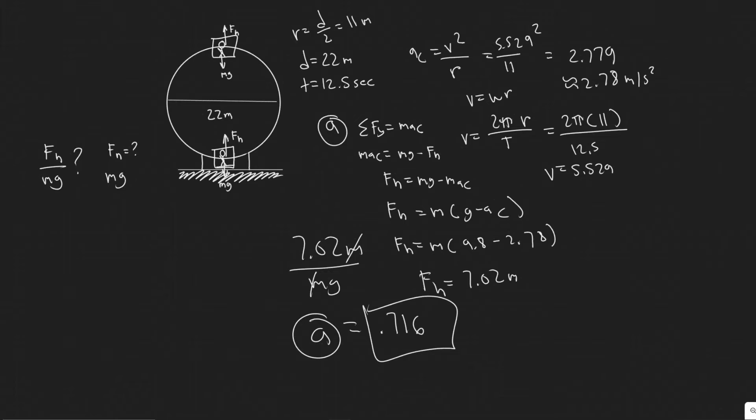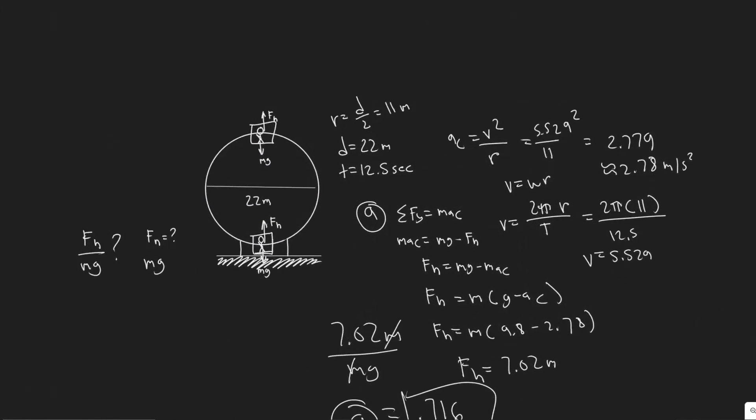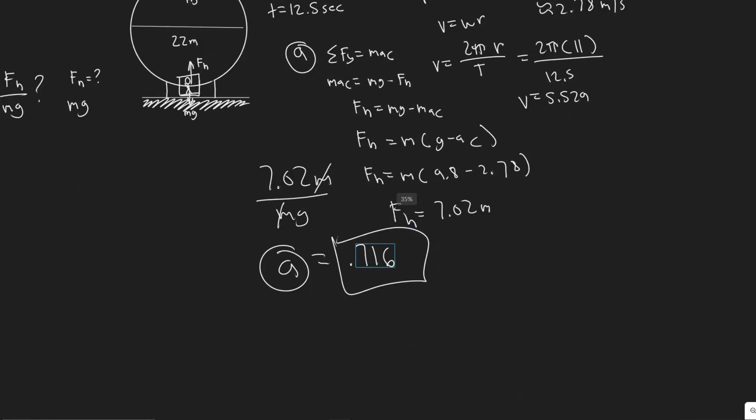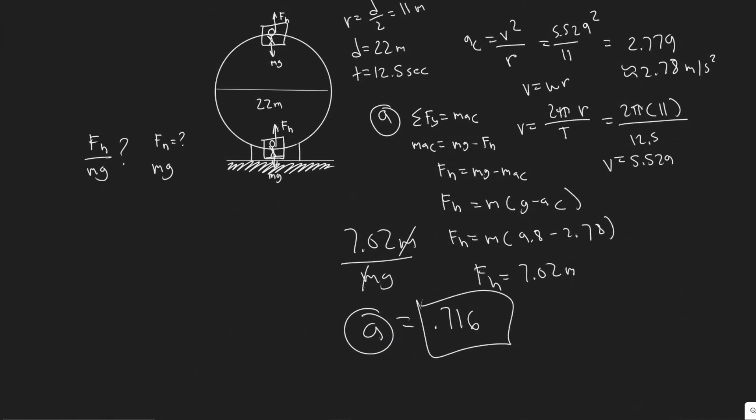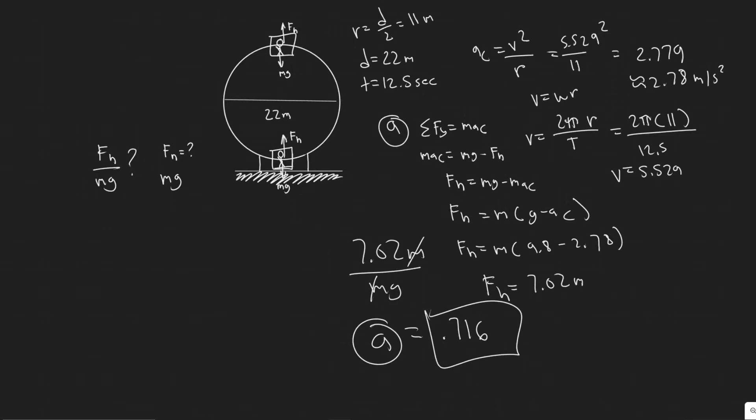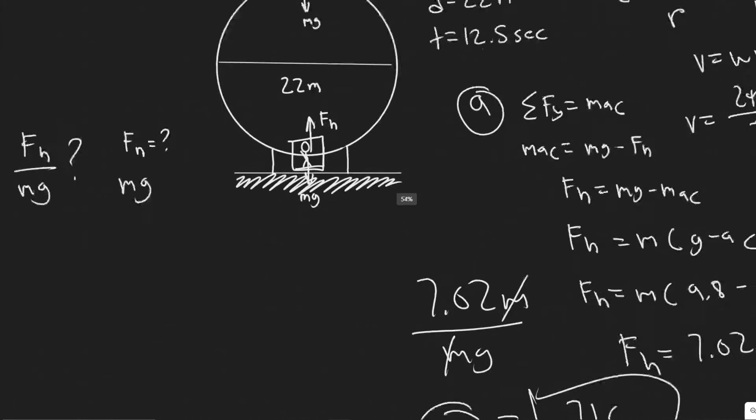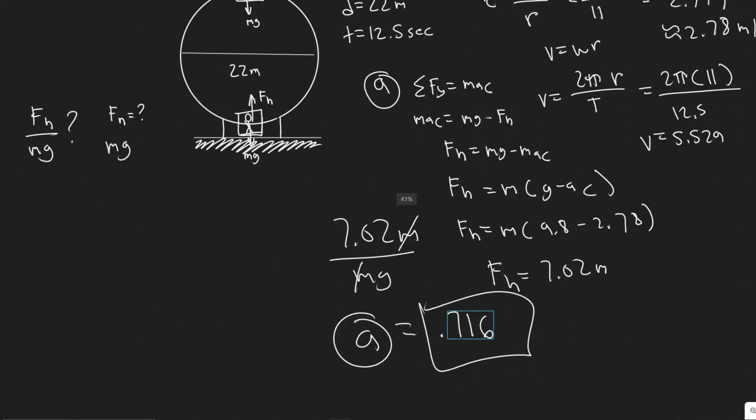So your answer to A, the ratio of the apparent weight to the real weight is 0.716. So you should know that our apparent weight is less than the real weight. So that's why this number is less than 1. If it was greater, right, our apparent weight, the person would feel like they are much heavier than they actually are.